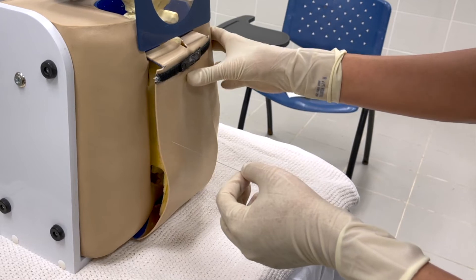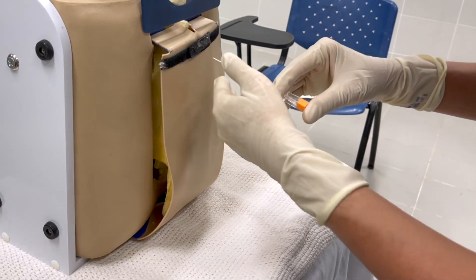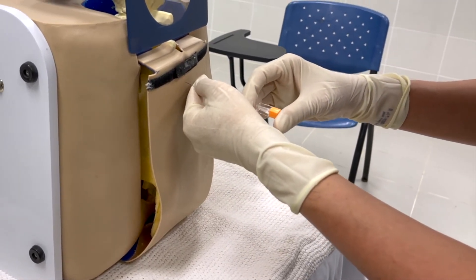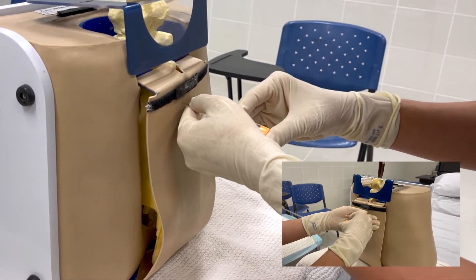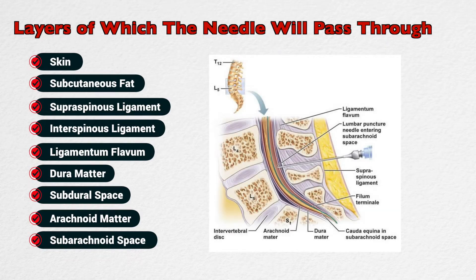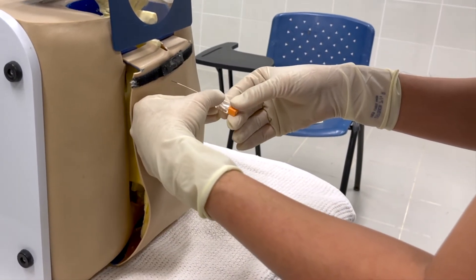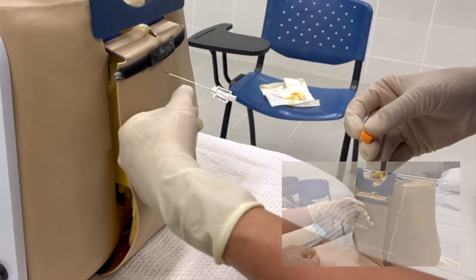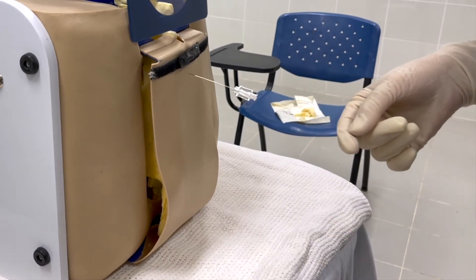Mr. Najib, we are going to insert the needle now — you may feel a bit of pain and discomfort, but I will do it gently. With the spinal needle perpendicular to the intervertebral space — once you have identified the space, you will see the CSF flowing out, clear and colourless.